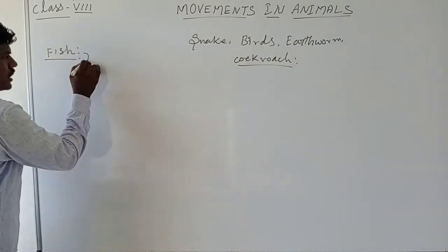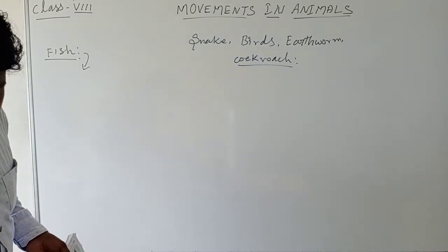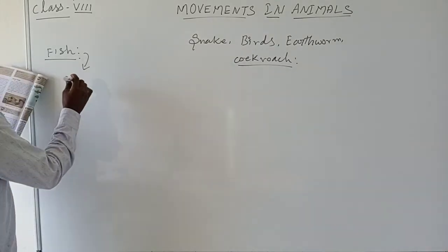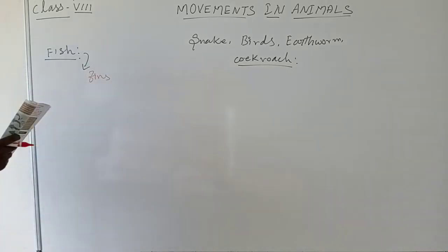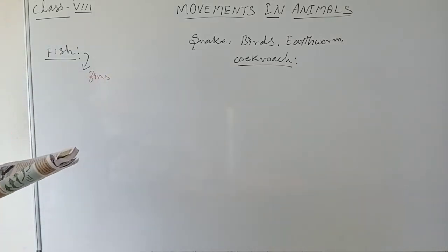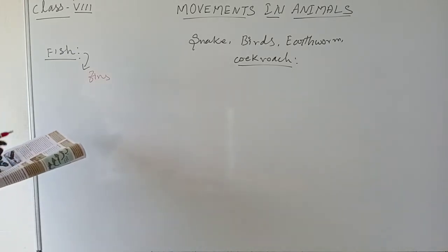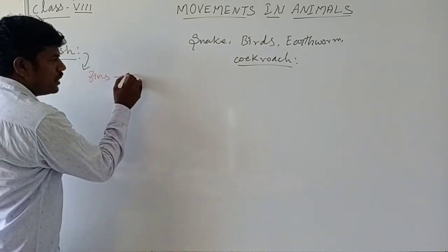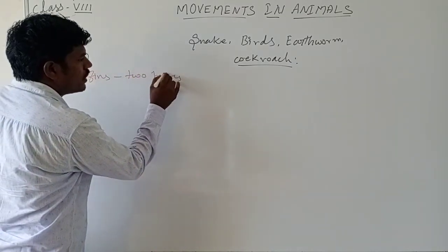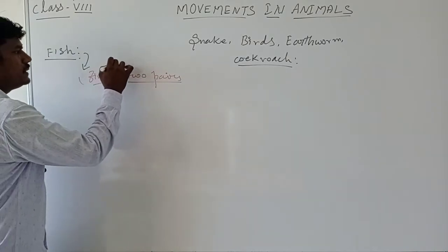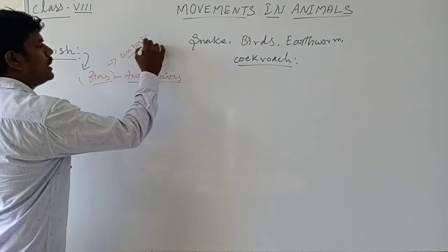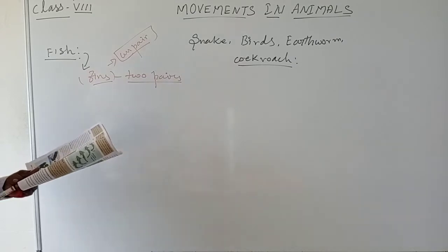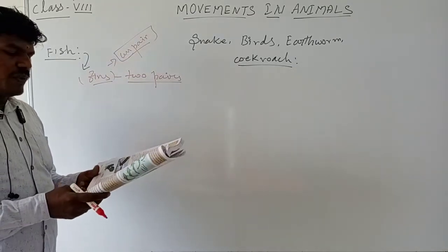We will start with fish. Fish move with the help of fins. They utilize fins to swim in water. They have two pairs of fins and unpaired fins. The body of the fish is streamlined to reduce friction while moving in water.